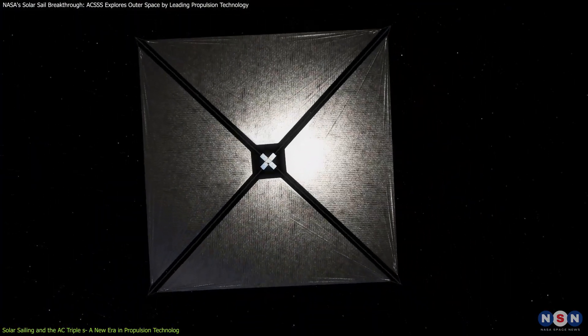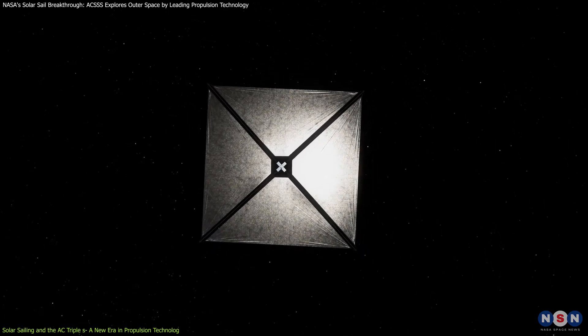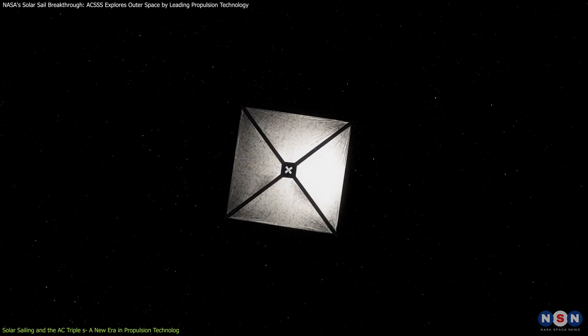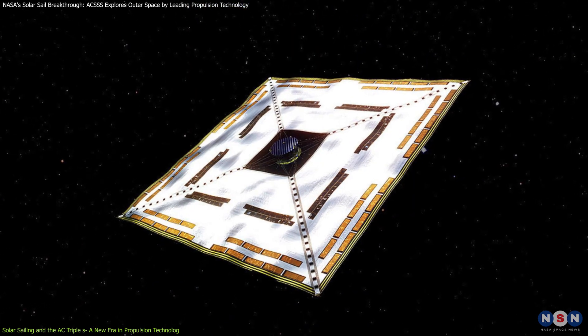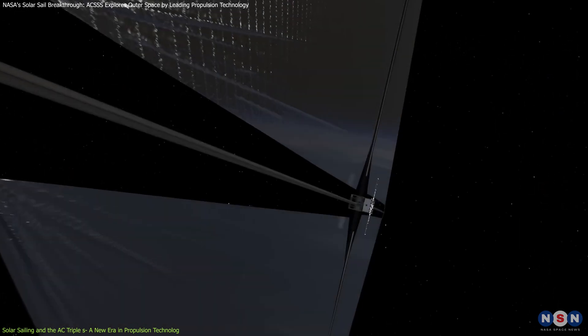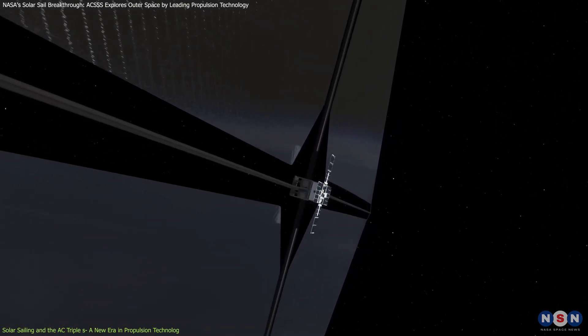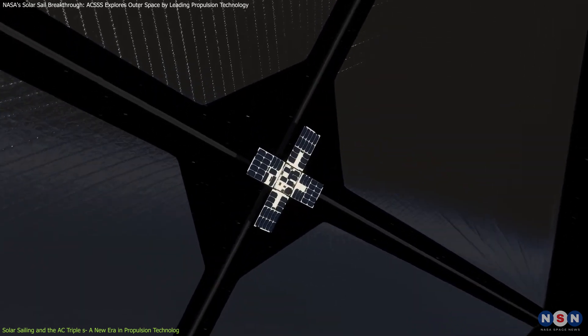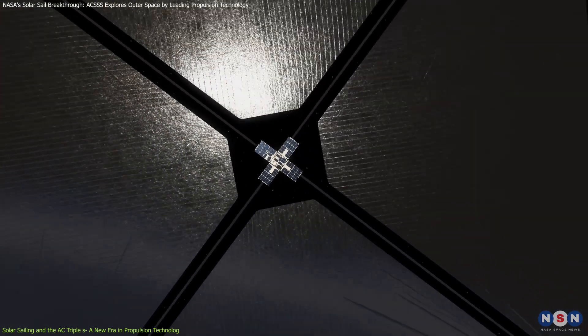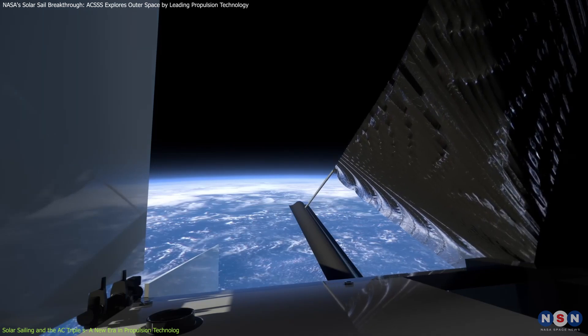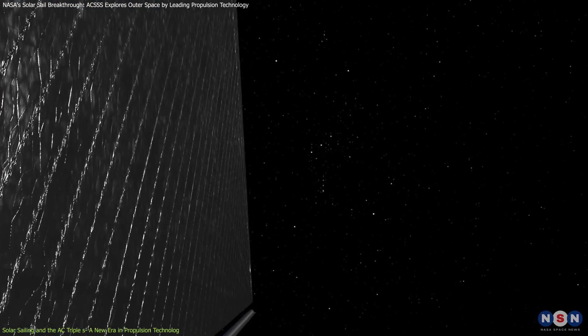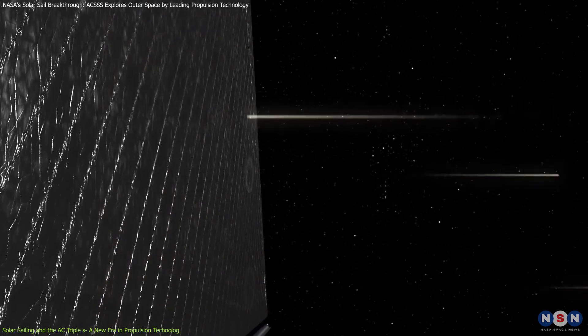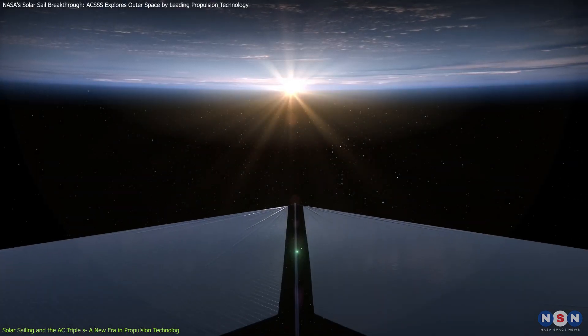This sail system marks a significant breakthrough in the field. It is a more advanced version of previous solar sail systems, such as JAXA's IKAROS, which successfully demonstrated solar sailing back in 2010. What sets this solar sail system apart is its use of new composite materials that are lighter, more durable, and more flexible than those used before. The booms that support the sails are made from a polymer material reinforced with carbon fiber, making them both strong and lightweight.